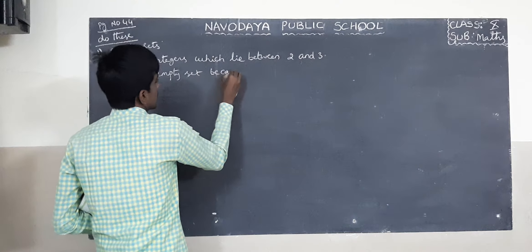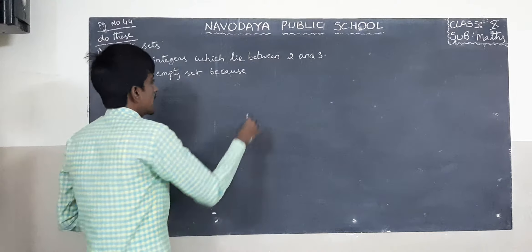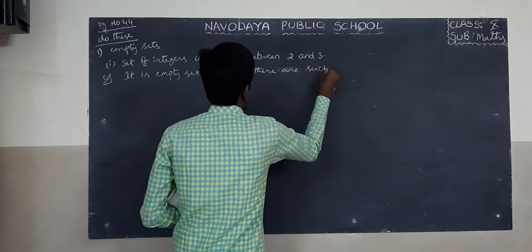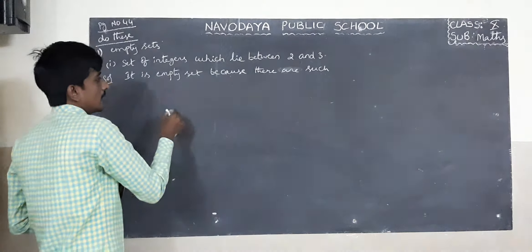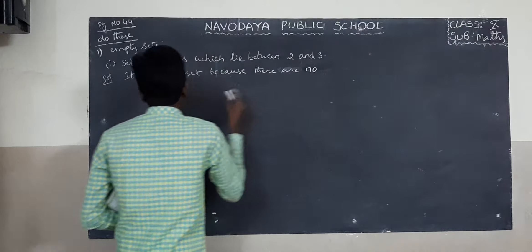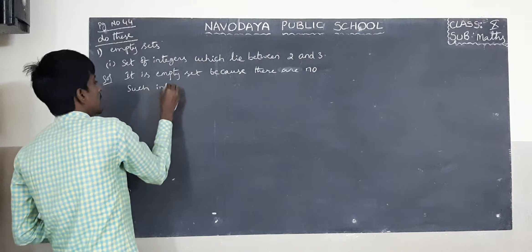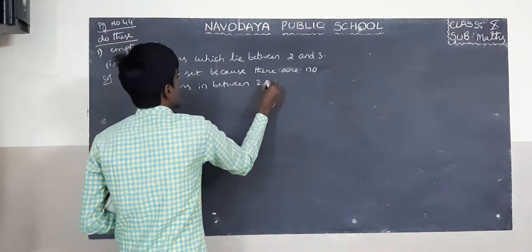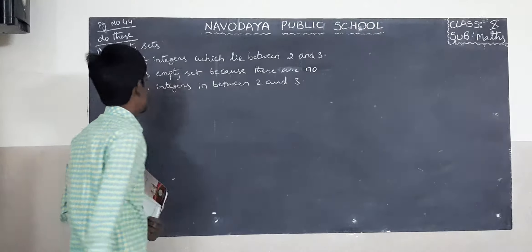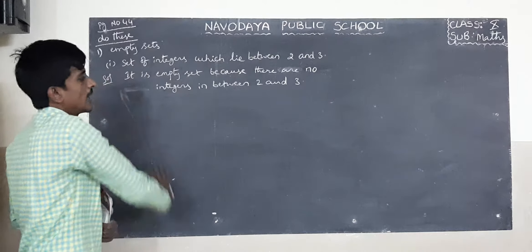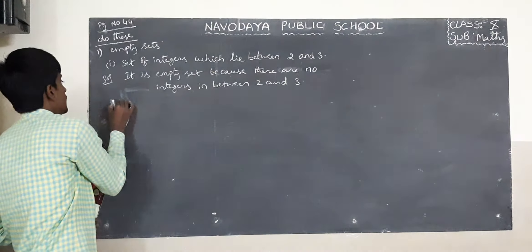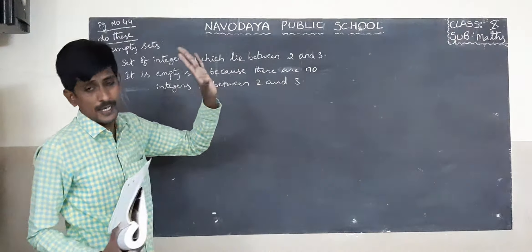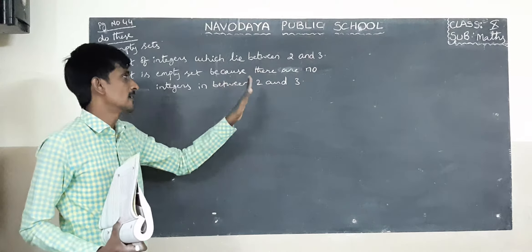Because there are no such integers in between 2 and 3. No integers in between 2 and 3. Also, between any two numbers, only rational numbers can be written in between 2 and 3.